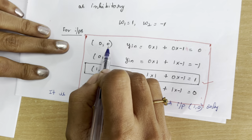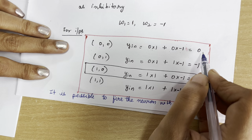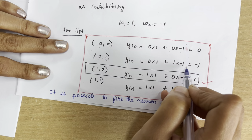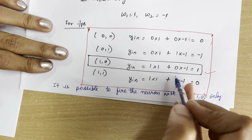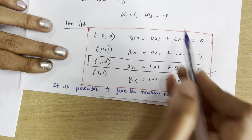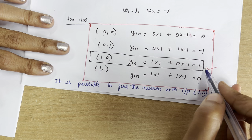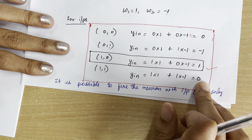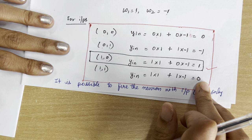For Case 2, we set w1 = 1 and w2 = −1. Computing y_input for all cases: for input (0,0): 0·1 + 0·(−1) = 0. For input (0,1): 0·1 + 1·(−1) = −1. For input (1,0): 1·1 + 0·(−1) = 1. For input (1,1): 1·1 + 1·(−1) = 0. The neuron fires only for input (1,0), giving output 1 — which exactly matches the AND-NOT truth table.